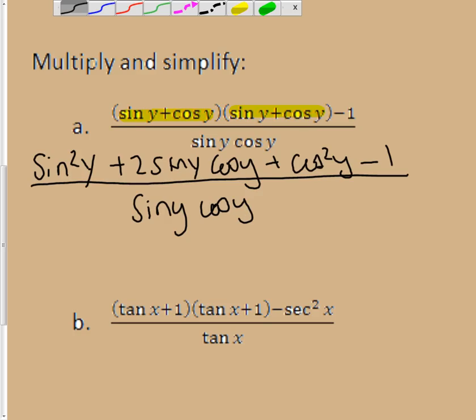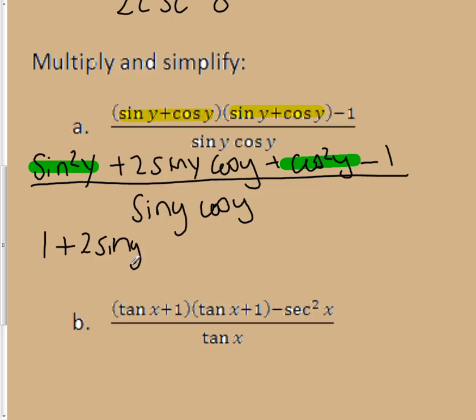But I know, as I'm looking at this, that the sine squared of y, and the cosine squared of y, if I add those two together, it becomes 1. So, what I have is 1 plus 2, the sine of y, cosine of y, minus 1, over the sine of y, cosine of y.